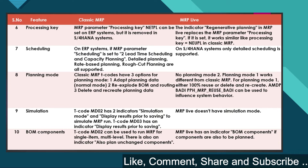For scheduling on ERP systems: if the MRP parameter scheduling is set to 2, it supports lead time scheduling, capacity planning, and detailed planning. In S4 HANA with MRP Live, only detailed scheduling is supported.